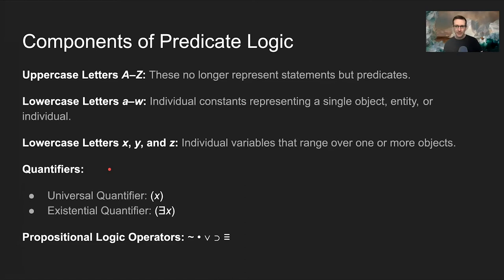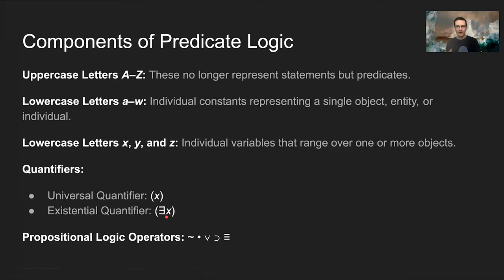In addition to those uses of letters, we also have what are called quantifiers. There are two types of quantifiers in predicate logic: a universal quantifier and an existential quantifier. The universal quantifier is sometimes represented by an upside-down A; your textbook uses an X in parentheses. The existential quantifier is a backwards capital E followed by an X. Universal quantifiers range over a number of objects; existential quantifiers refer to a particular object.